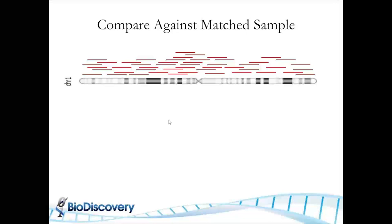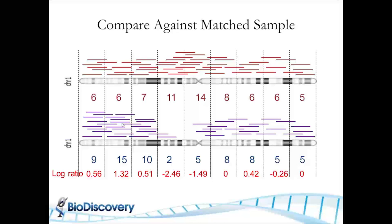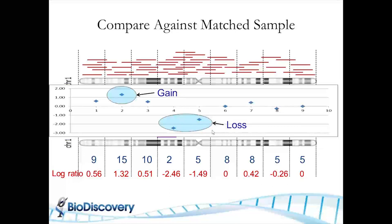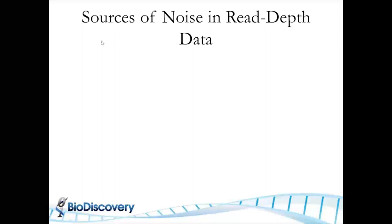Just like aCGH, if you had a tumor and a normal pair — so let's say this is your tumor and this is your normal — you take the same binning approach. For your normal, you count and say, this is my expected value: I expect to get 9, 15, etc. Then you create a log ratio just like you would with an aCGH type of approach. Your gains will be where you get positive numbers and your losses will be where you get negative log ratio numbers. This is a method that we can talk about in more detail.